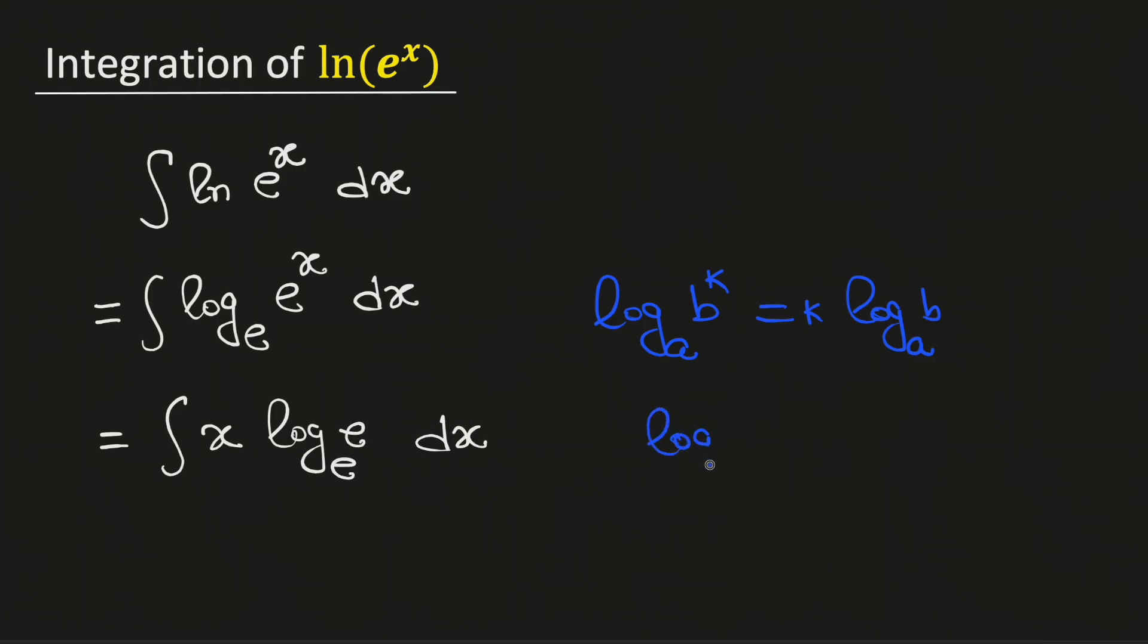Again we know that logarithm of a with base a is same as 1, therefore logarithm of e with base e will be 1. So this will be equal to integration of x times 1 dx, which is same as integration of x dx.